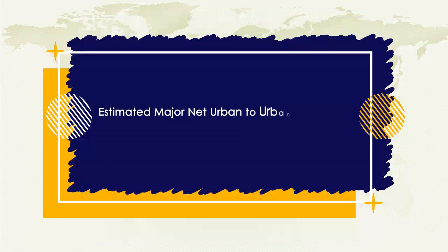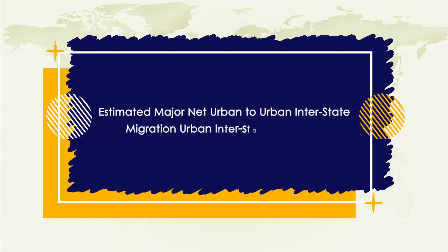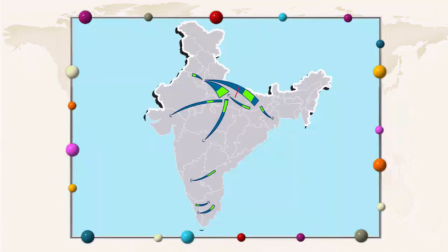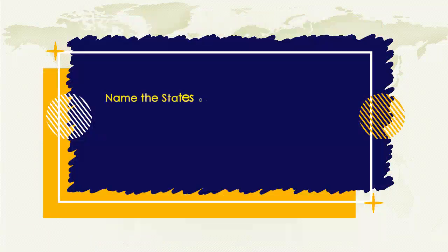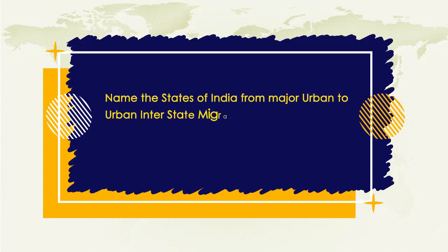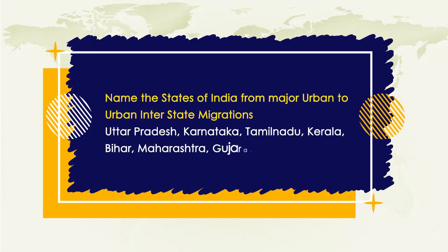Refer to the table on estimated major net urban-to-urban interstate migration, 2010–2011. Name the states of India from major urban-to-urban interstate migration. Answer: Uttar Pradesh, Karnataka, Tamil Nadu, Kerala, Bihar, Maharashtra, Gujarat.